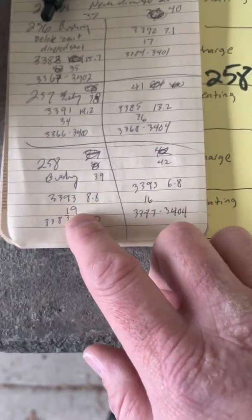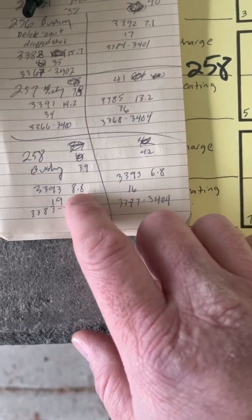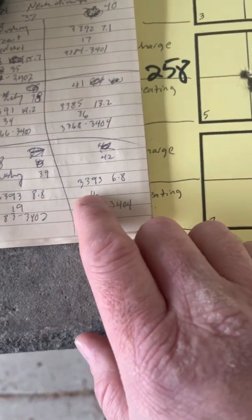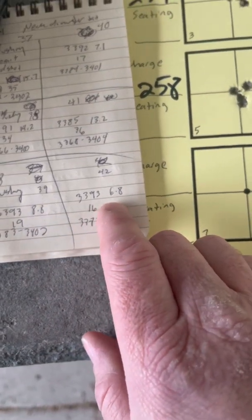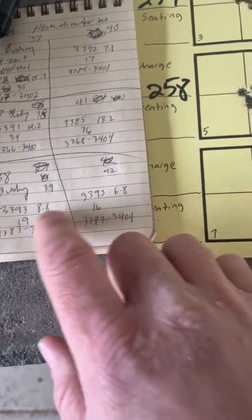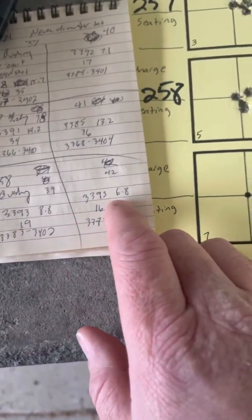Here's the .258 bushing, produced a 3393 single-digit SDs. And again, 3393 with single-digit SDs. So really stable velocity there in standard deviations.